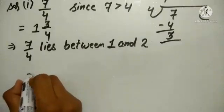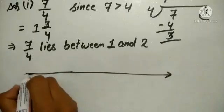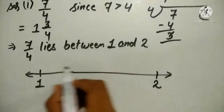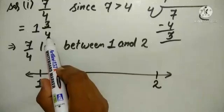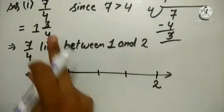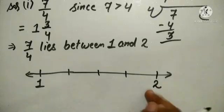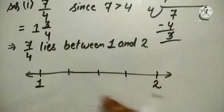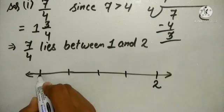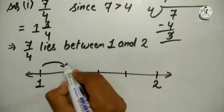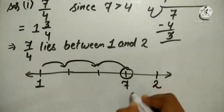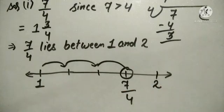Next we draw the number line. The number lies between 1 and 2. Since the denominator is 4, we divide the distance between 1 and 2 into 4 equal parts: 1st, 2nd, 3rd, and 4th. Now check the numerator of the mixed fraction — it is 3. So the 3rd part from 1 is marked as 7 over 4. Counting from 1: 1st, 2nd, 3rd — this 3rd position represents 7 over 4.